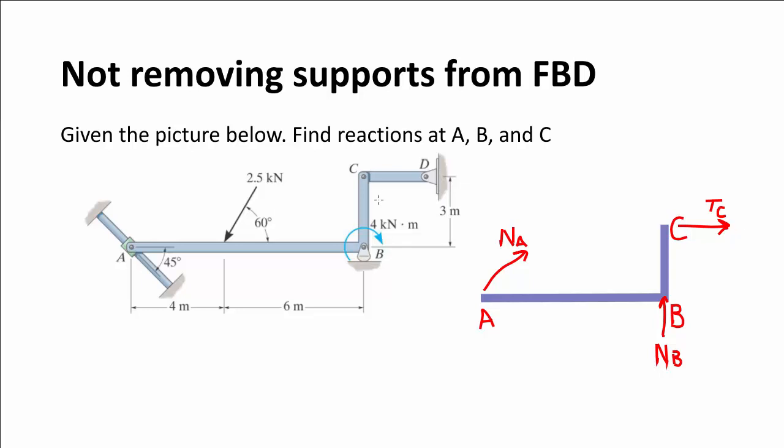Never forget to add your external forces that are applied. We have here this 2.5 kilonewton force. And then we also have a couple down here at B. This couple is in the negative right-hand rule direction and has a magnitude of 4 kilonewton meters. So here is our free body diagram: all support forces, the three of them, also our external force and our external couple.